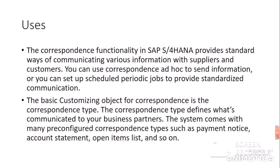In our previous video we discussed about Dunning. Dunning letters are also one kind of correspondence — we need to send letters to customers, so that is one correspondence type. In the same way, you can use correspondence ad hoc to send information, or you can set up scheduled periodic jobs to provide standardized communication. So correspondence types are basically used for communicating with suppliers and customers.